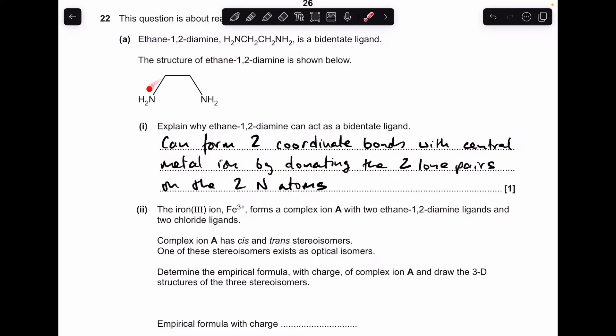So I'll make a start. Why can ethane-1,2-diamine act as a bidentate ligand? Well, it's got two nitrogen atoms. Each of those has got a lone pair on, so it can form two coordinate bonds with the central metal ion by donating those two lone pairs.